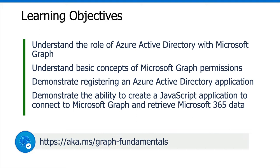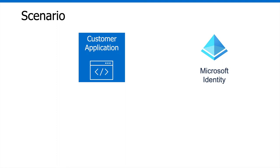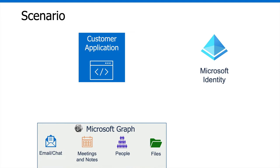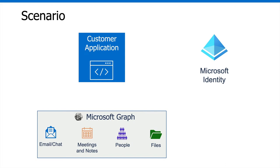Let's talk through the scenario in this module. We're going to assume that your development team is in the initial planning stage for building a customer app. The app is going to allow salespeople to access historical information about previous customer interactions — things like emails or chats in Teams, meetings and notes, people within the organization that could help on sales calls, and files sent to or received from customers, whether about the customers themselves, products, or invoices.